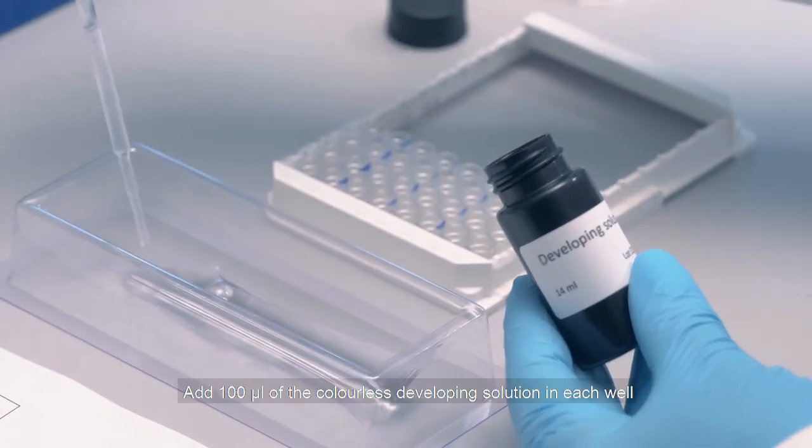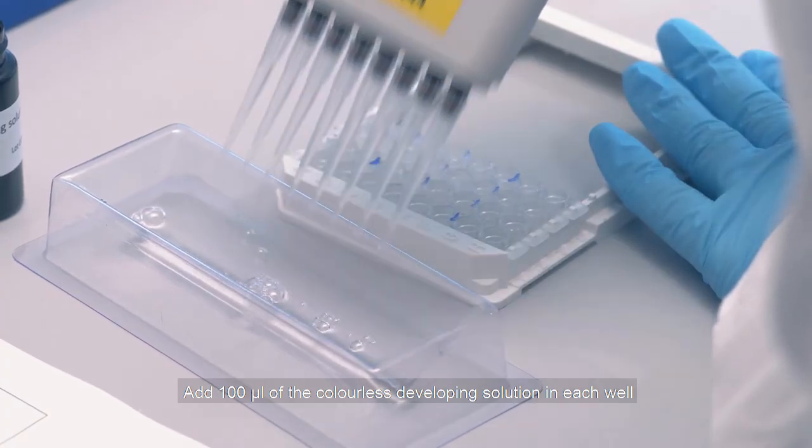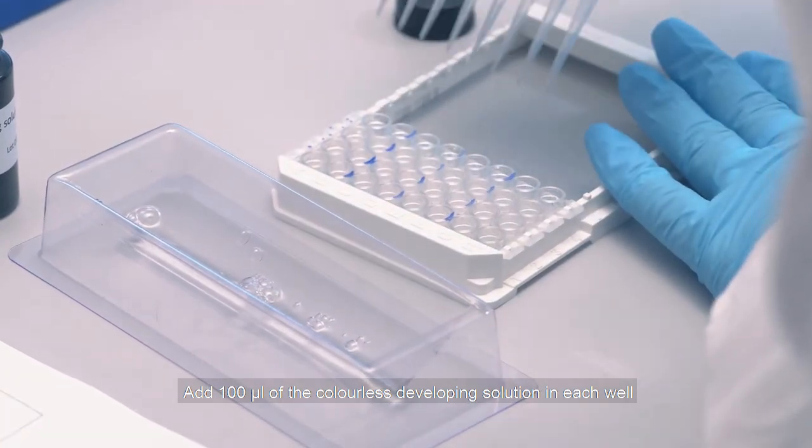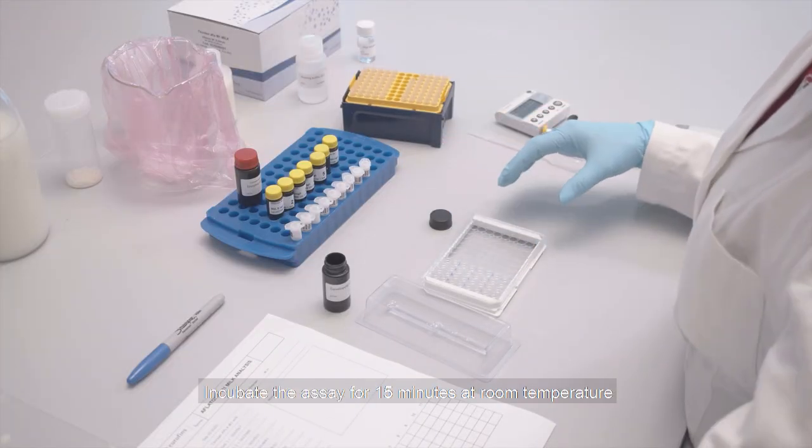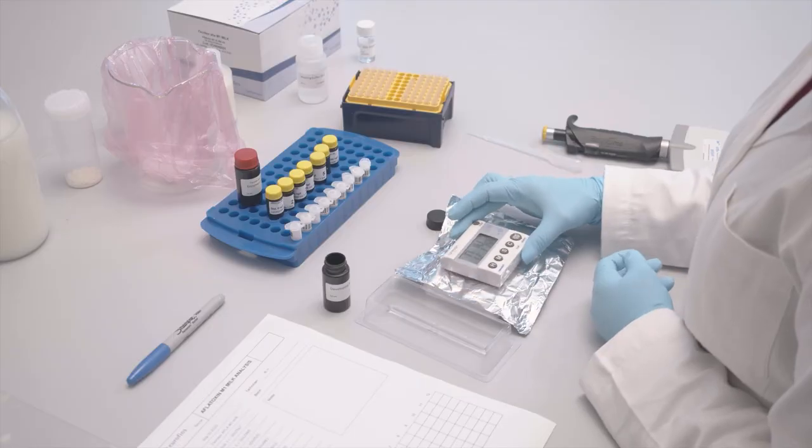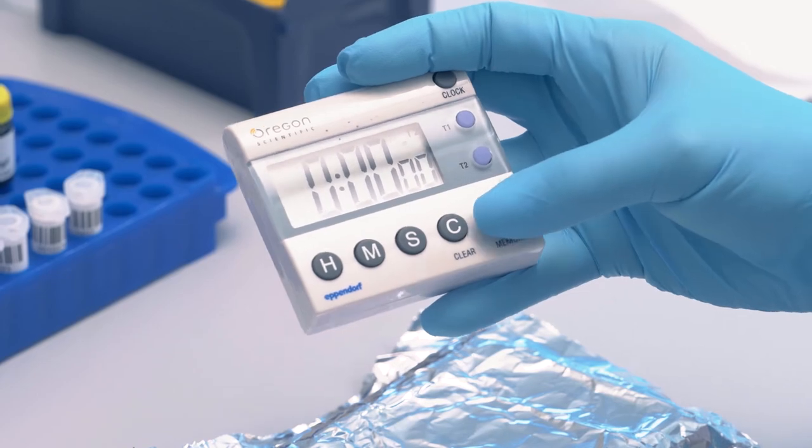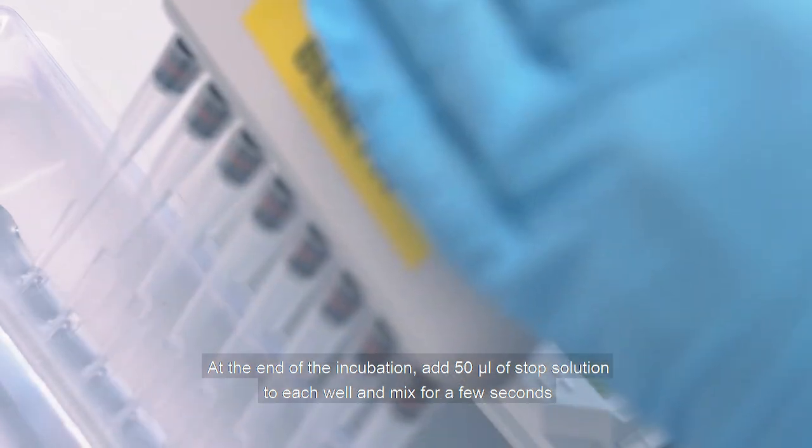Add 100 microliters of the colorless developing solution in each well. Incubate the assay for 15 minutes at room temperature. At the end of the incubation, add 50 microliters of stop solution to each well and mix for a few seconds.